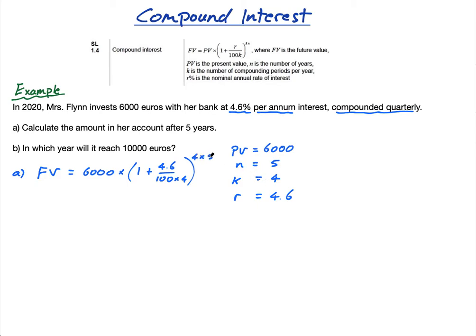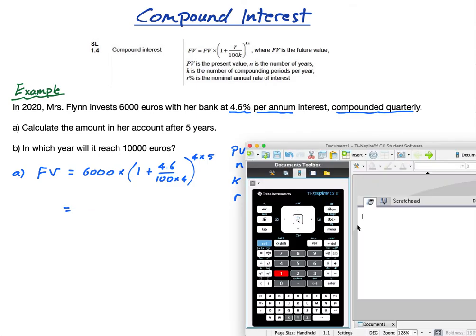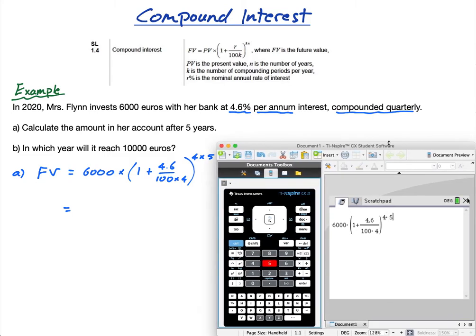Straightforward. Get out your calculator and type it out: 6,000 times [1 plus (4.6 over 100 times 4)] all to the power of 4 times 5.